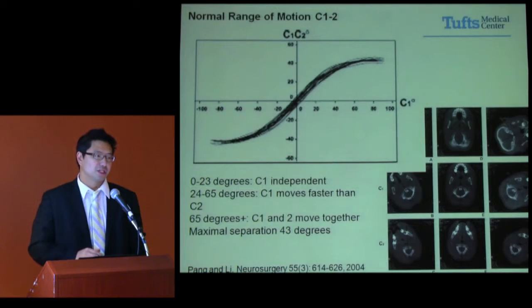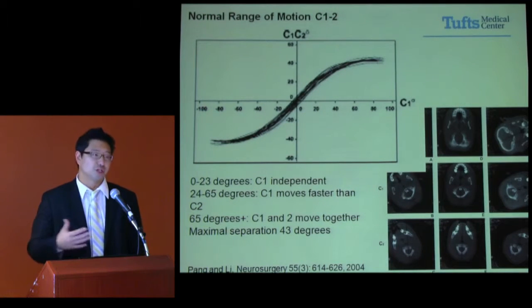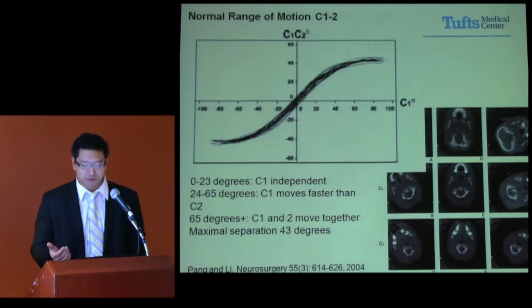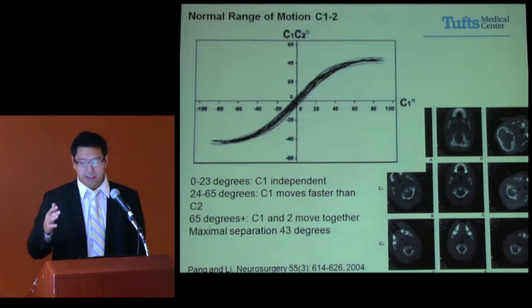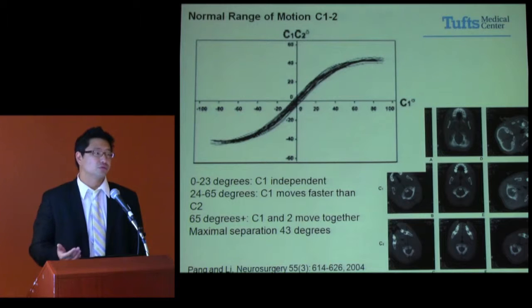Before talking about pathologic entities, it's good to know what normal range of motion is. Dr. Peng helped delineate this in prepubescent children. I don't know how he got IRB approval, but he imaged children turning to the left, to the right, and in a neutral position, studying atlantoaxial rotary fixation.